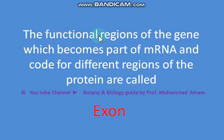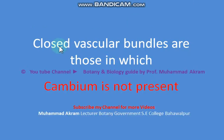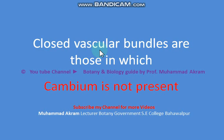The functional regions of the gene which become part of messenger RNA and code for different regions of the proteins are called exons. The closed vascular bundles are those in which cambium is not present. If cambium is absent in vascular bundles, it is termed as closed vascular bundles.